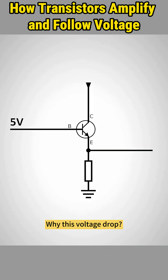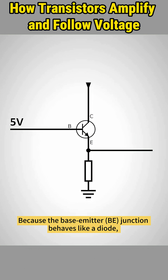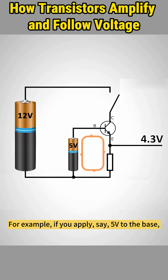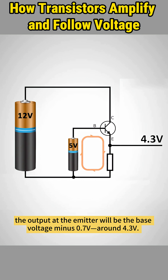Why this voltage drop? Because the base-emitter junction behaves like a diode, and it requires the emitter voltage to be lower than the base for current to flow. For example, if you apply 5 volts to the base, the output at the emitter will be the base voltage minus 0.7 volts, around 4.3 volts.